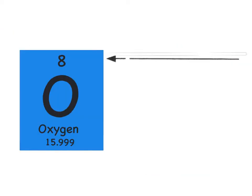Now that we've zoomed in on the element oxygen, we're going to identify the information provided in the periodic table. At the top — always listed in the center, sometimes in the corner, but always at the top — is the atomic number. The atomic number is really important because it represents how many protons or electrons are in the atom for oxygen. Please write 'atomic number' on the line that's pointing at the 8.